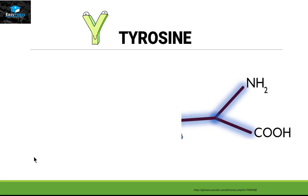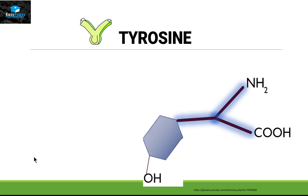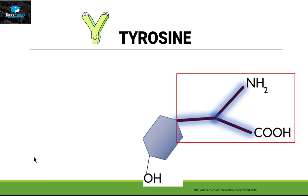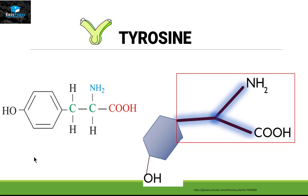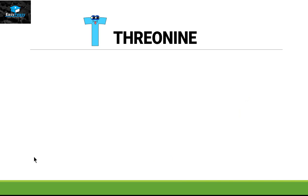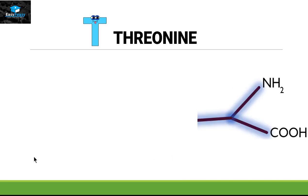Next is tyrosine — the symbol is Y. We take this fork structure and attach a phenol group to it. This is the structure for tyrosine and it is quite easy to make officially. Next is threonine — the symbol is T. We take this fork structure, extend one carbon atom, and attach an OH group to the beta carbon.